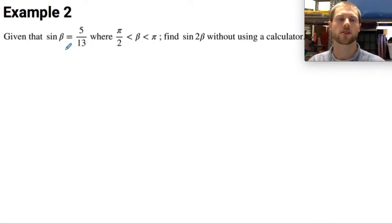In this next example, we are given that the sine of beta equals 5 thirteenths, where pi over 2 is less than beta, which is less than pi, and we want to find the sine of 2 beta without using a calculator.